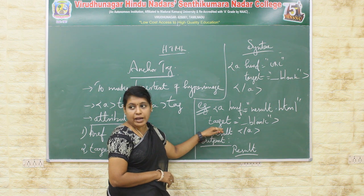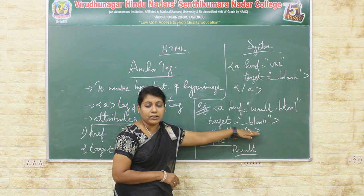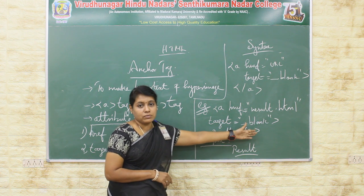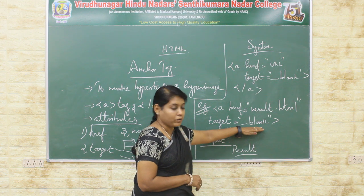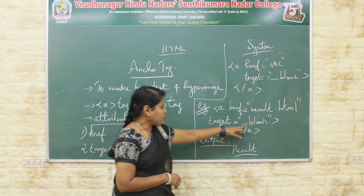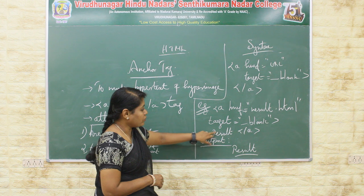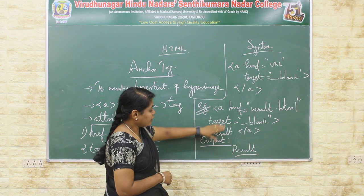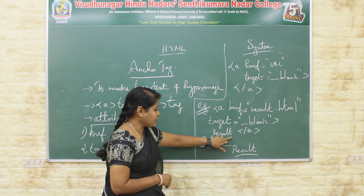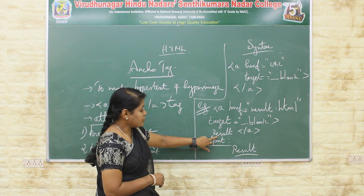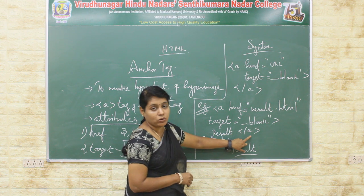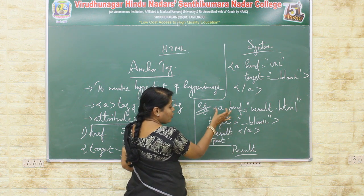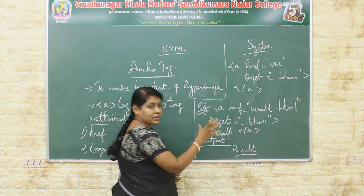The next attribute is target equal to underscore blank — that means the result web page will be opened on the next tab of the web browser, a new tab. Then close the open anchor tag. After the open anchor tag, write the content word — in this case 'result'. After that word, close the anchor tag. Whatever word or line you write within the open and close anchor tags, that will become hypertext.